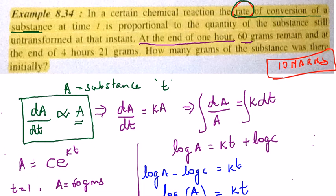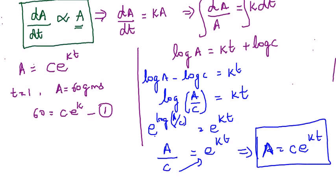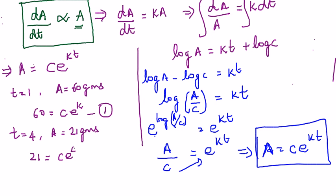Next, at the end of 4 hours, the amount remaining is only 21 grams — so the substance is reducing. Substituting into A = Ce^(kt) with t = 4: 21 = Ce^(4k). This is our second equation.